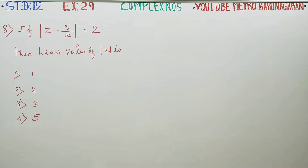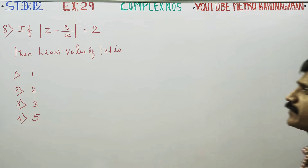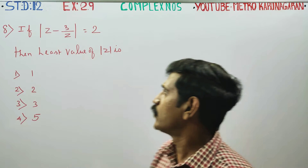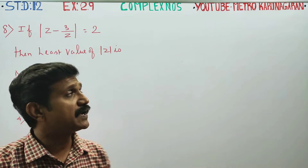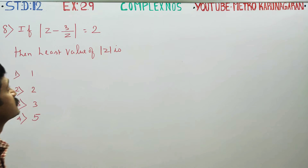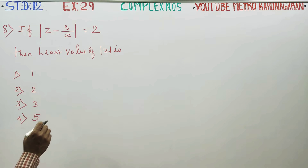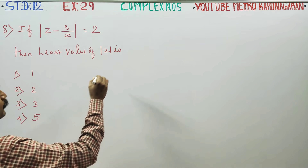Dear 12th standard students, in Exercise 2.9, Sum number 8: if modulus of Z minus 3 by Z is equal to 2.